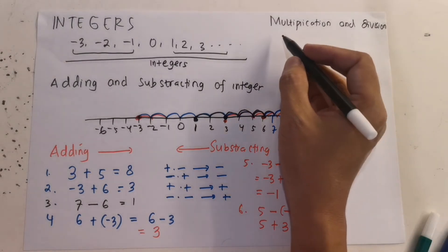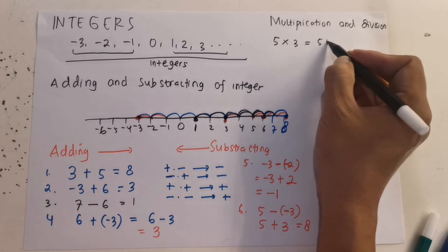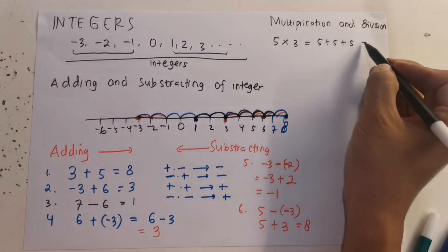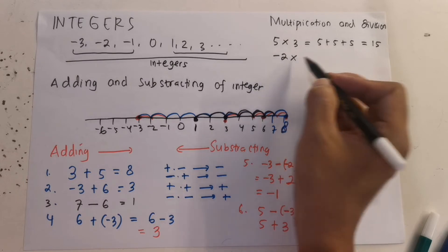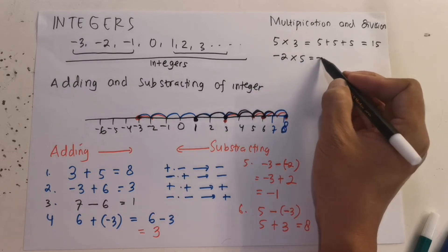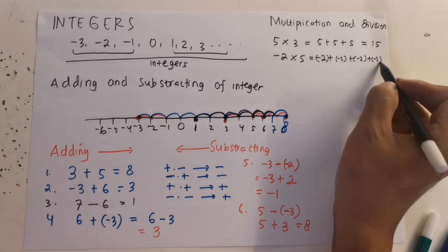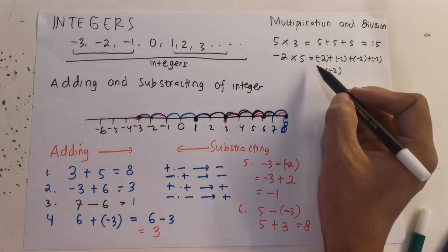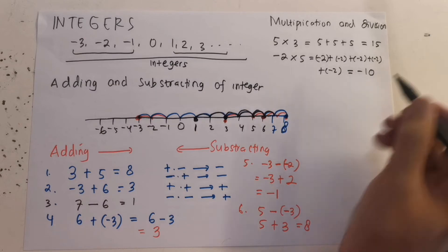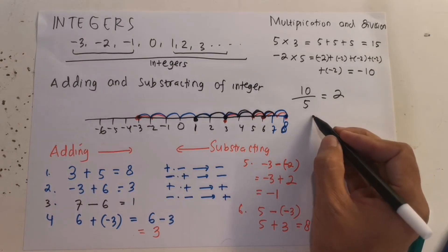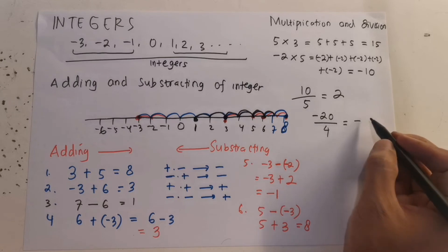For multiplication, example: 5 times 3 means 5 plus 5 plus 5, three times, so the answer is 15. Negative 2 times 5 means negative 2 plus negative 2 plus negative 2 plus negative 2 plus negative 2, five times, so the answer is negative 10. And negative 20 divided by 4, the answer is negative 5.